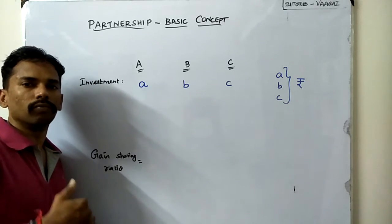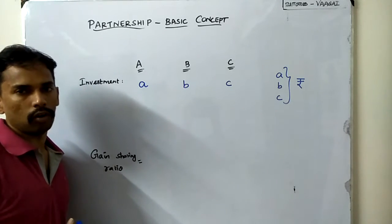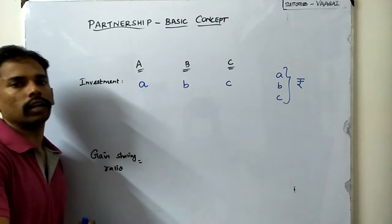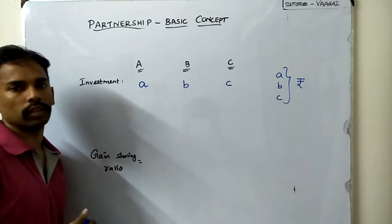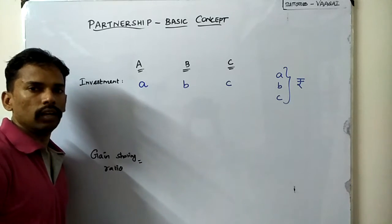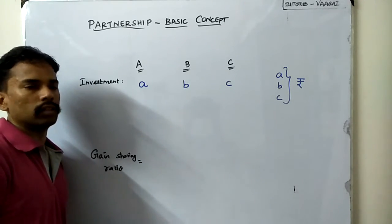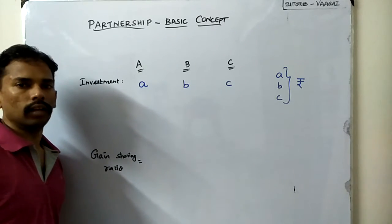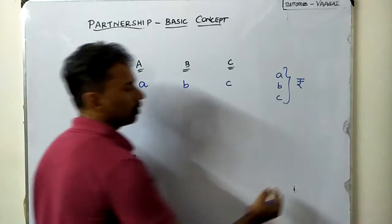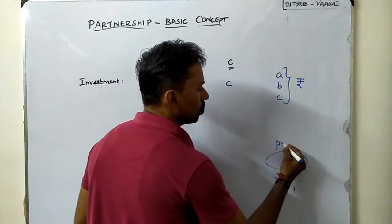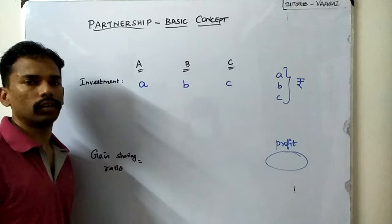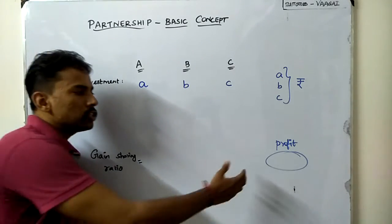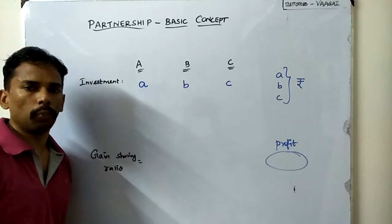If they are going to invest at the starting of the business, then all of their investments will be staying in the business for the same period of time. This is important to understand, provided they are not taking any money from the business or adding any money — if they keep it constant, then all of their investments are going to stay for the same time period. Then after some period of time, there is a profit, and all three people are going to share this profit.